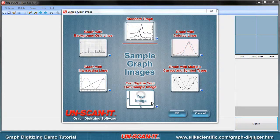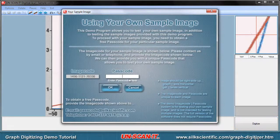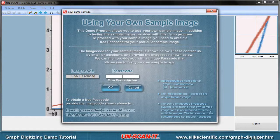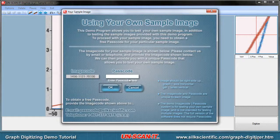If you would like to digitize your own sample graph image, you can select the Your Image button at the bottom of the original sample images screen as shown. Then follow a similar procedure as outlined earlier in this video to digitize your graph. If using your own sample graph image, the software will generate an image code which you can provide to us and we will provide the corresponding password to use that sample image.